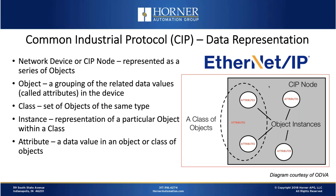What are objects? Objects are a grouping of related data values, called attributes, in a device or node. A class is a set of objects of the same type. An instance is a representation of a particular object within a class. Attributes are a data value in an object, or a data object in a class, since a class of objects can also have attributes. These are the common definitions around CIP from a data representation standpoint.